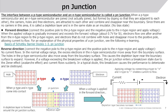P-N Junction. The interface between a p-type semiconductor and an n-type semiconductor is called the p-n junction. When they are joined — not actually joined, but formed by doping so that they are adjacent — the carriers (holes and free electrons) are attracted to each other, combine, and disappear near the boundary. Since there are no carriers in this area, it is called the depletion layer and is in the same state as an insulator.